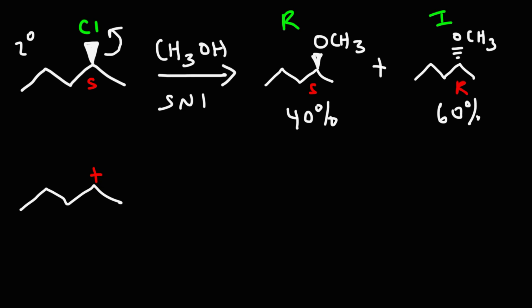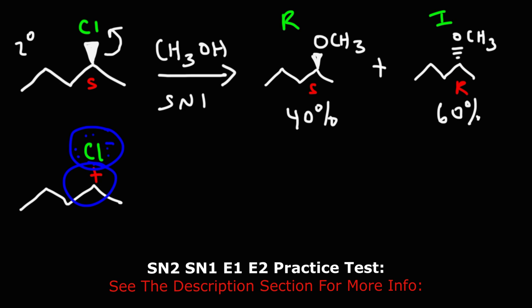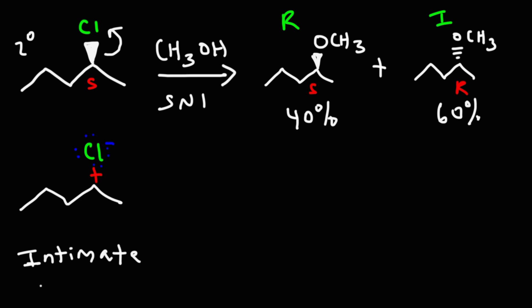Now when the leaving group leaves, usually it's not very far away from the carbocation. So even though they've broken apart, the chloride is likely relatively close to the carbocation. Now the solvent, methanol, could solvate the chloride and move it away from the carbocation, but a lot of times they're pretty close. And in this situation, when these two oppositely charged ions are close to each other, that's what is known as the intimate ion pair. Keyword intimate, that means they're very close to each other. And we also have a pair of ions. This is one ion, that's two, two makes a pair. So that is the intimate ion pair.